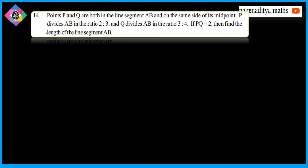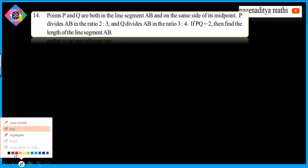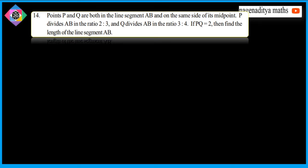Welcome to 8th class, problem 14. Points P and Q are both in the line segment AB on the same side of its midpoint. P divides AB in the ratio 2:3 and Q divides AB in the ratio 3:4. If PQ is equal to 2 units, then find the length of the line segment.